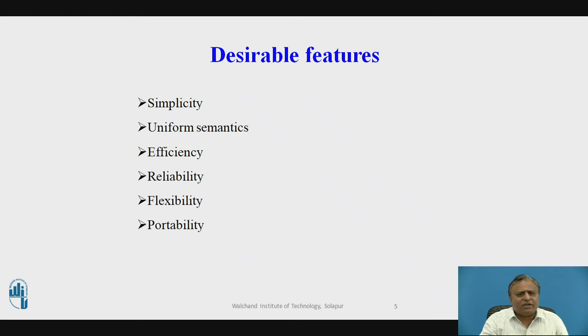Flexibility: the inter-process communication primitives should be flexible so that users can specify the type and level of reliability. Correctness requirements can be chosen, and the kind of flow — synchronous or asynchronous — can also be chosen.